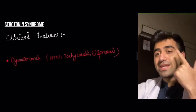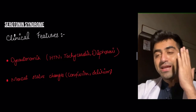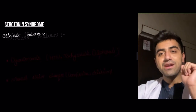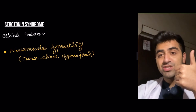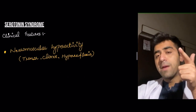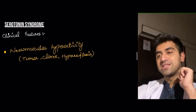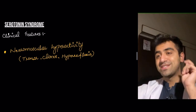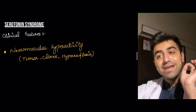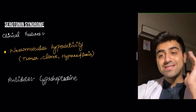First, dysautonomia — meaning hypertension, tachycardia, and diaphoresis due to increased activity of the sympathetic nervous system. Second, mental status changes — confusion and delirium, because these neurotransmitters are normally present in the brain and their activity has been greatly increased. Third, neuromuscular hyperactivity — particularly tremor, clonus, and hyperreflexia. How you differentiate serotonin syndrome from NMS (neuroleptic malignant syndrome) or malignant hyperthermia is covered in detail in my video on serotonin syndrome. The antidote for serotonin syndrome is cyproheptadine.